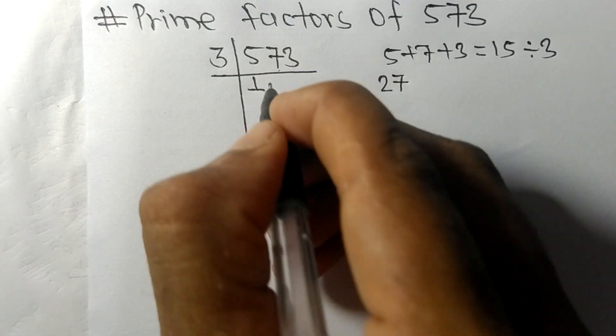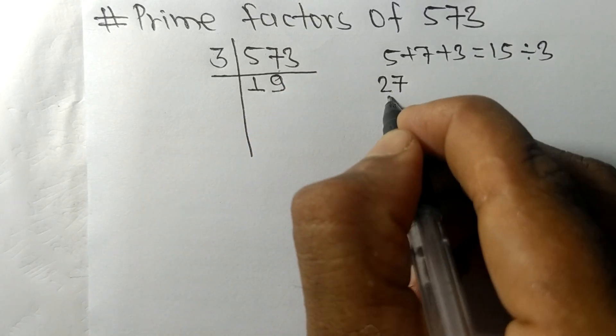3 times 1 means 3, remainder 2, and this 7... 27. 3 times 9 means 27, and 3 times 1 means 3.